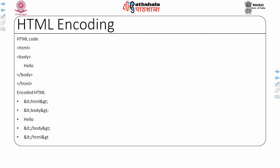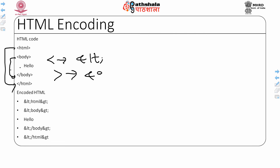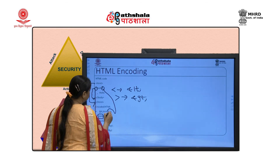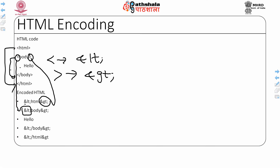This was about URL encoding where special characters are encoded into other characters. Now the next term is HTML encoding. In HTML encoding, the less-than sign is substituted by &lt; and the greater-than sign is substituted by &gt;, so the readability of the code is reduced. This is called HTML encoding.